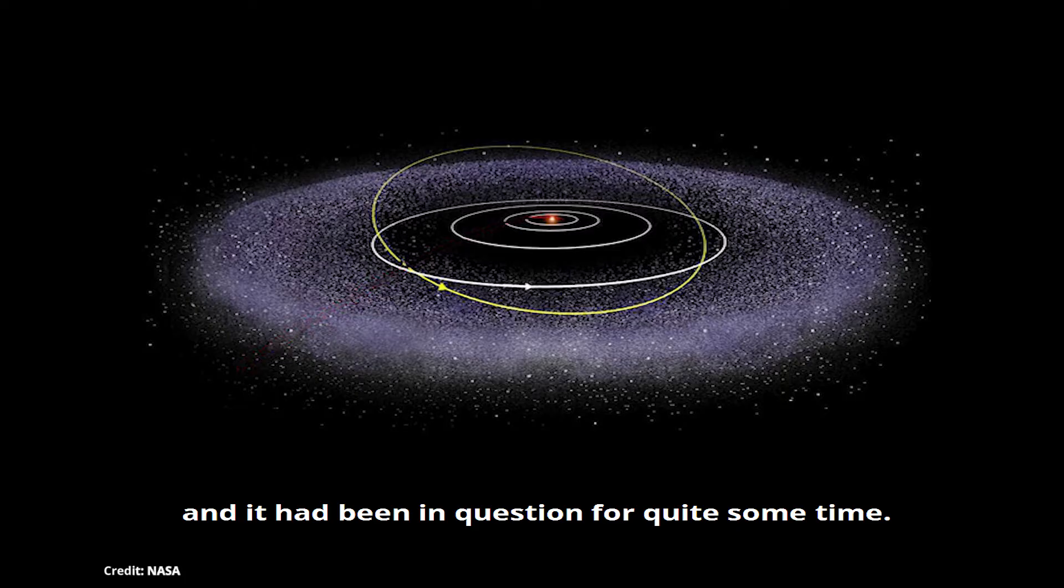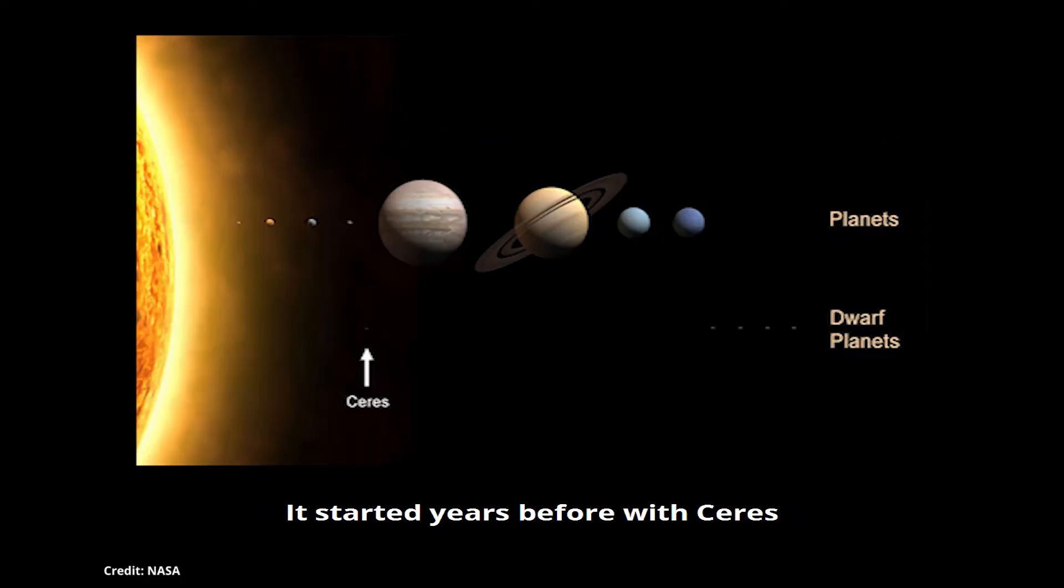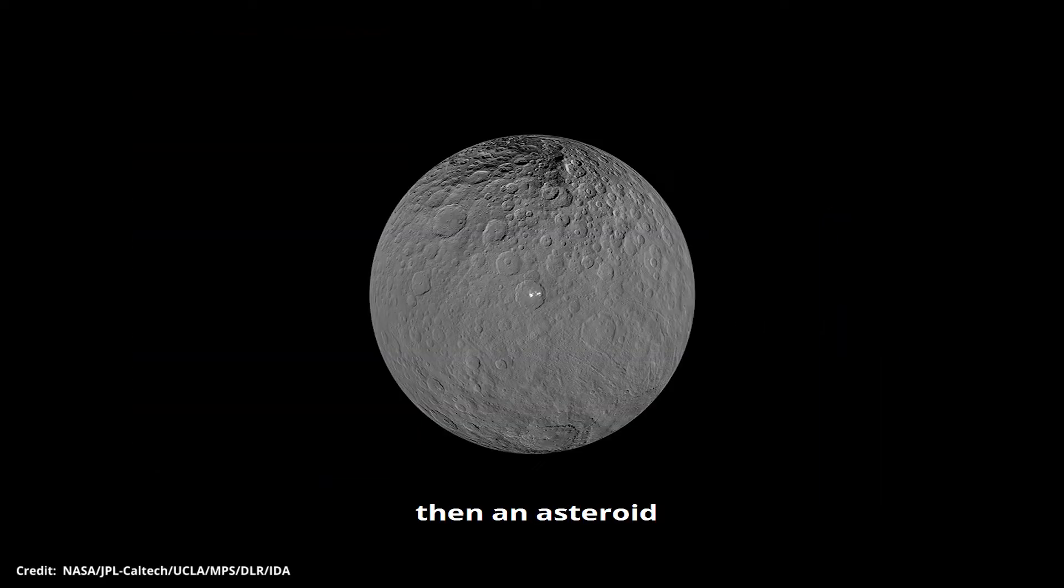It had been in question for quite some time. It started years before with Ceres, which went from being a comet to a planet, then an asteroid and the first object in the asteroid belt.